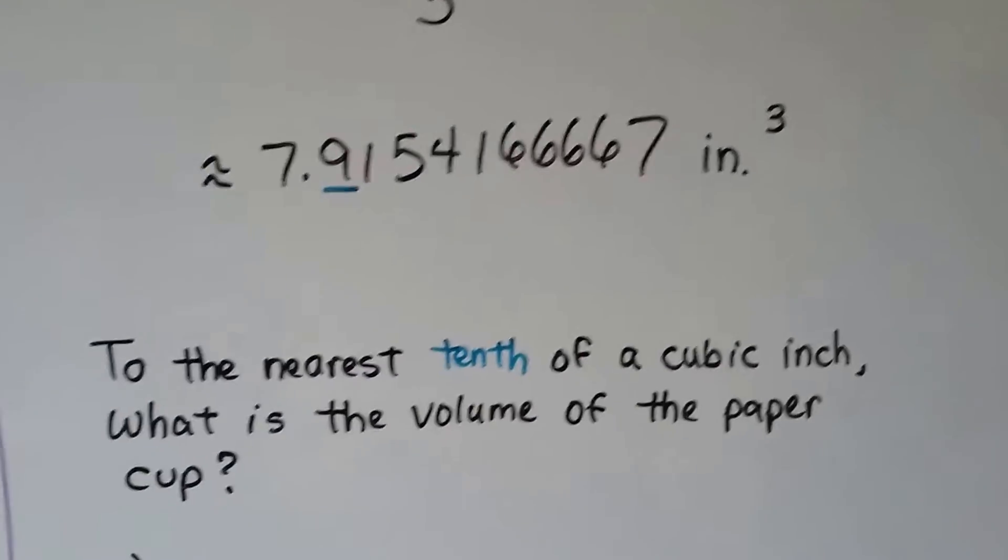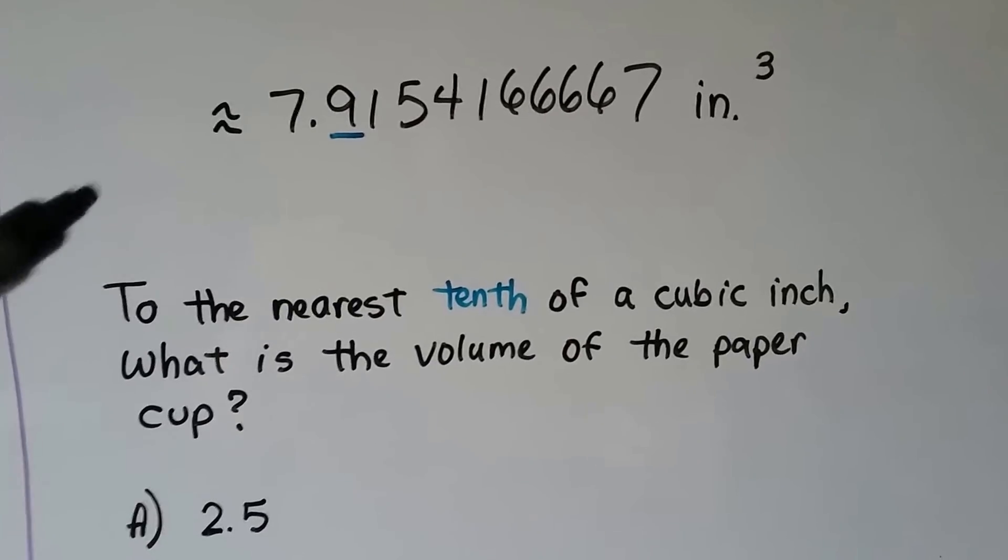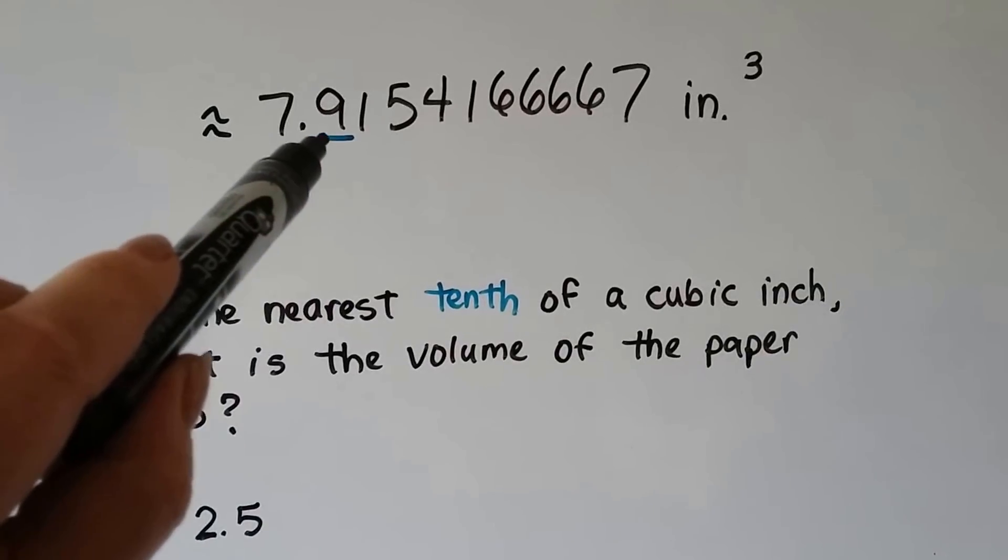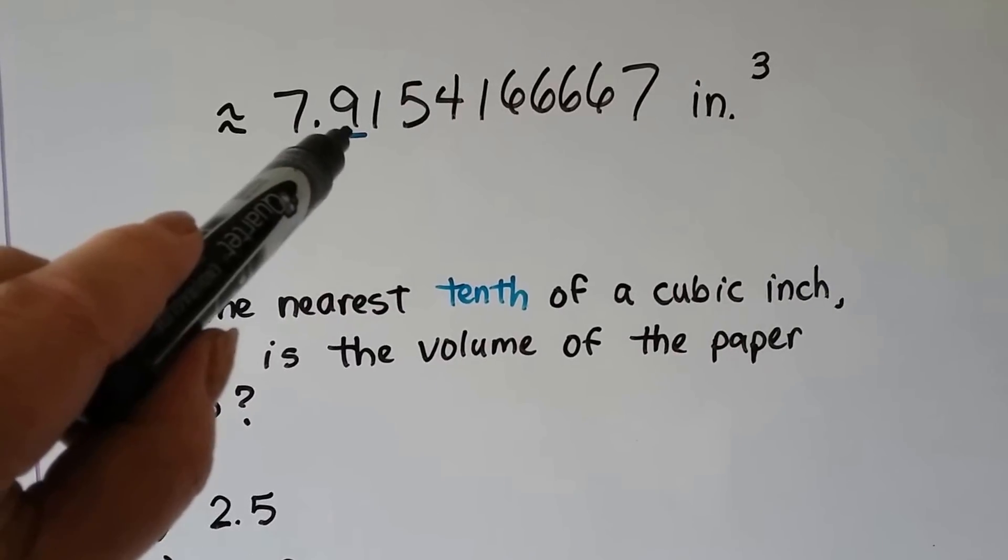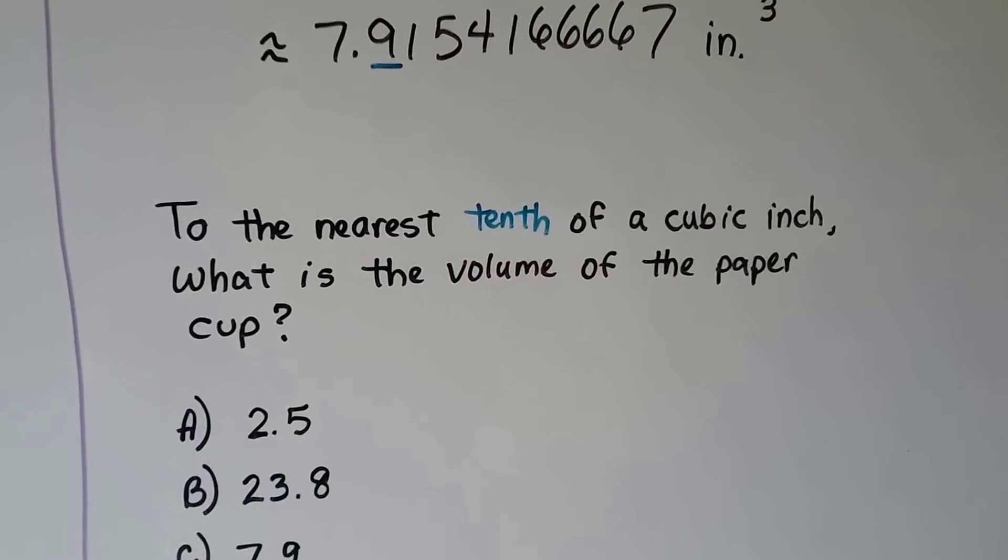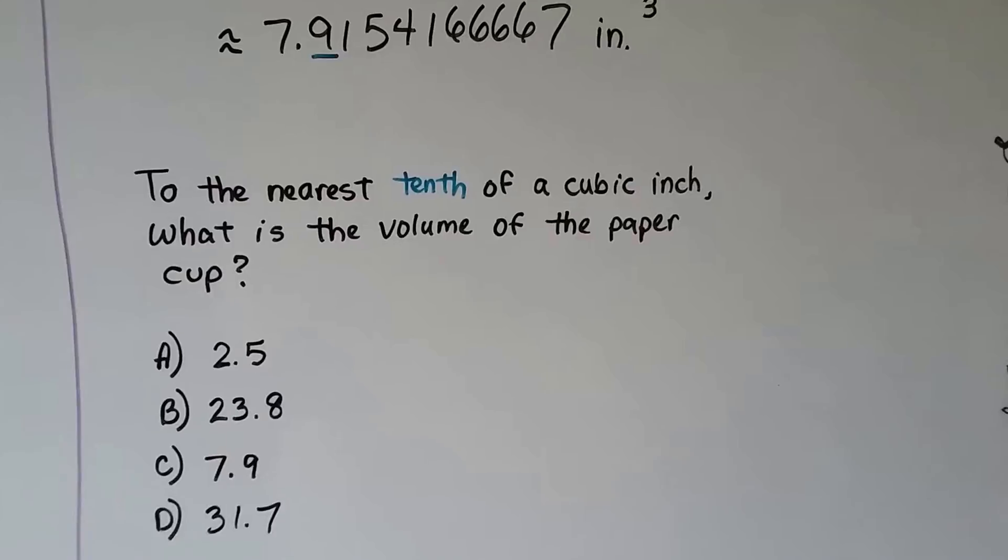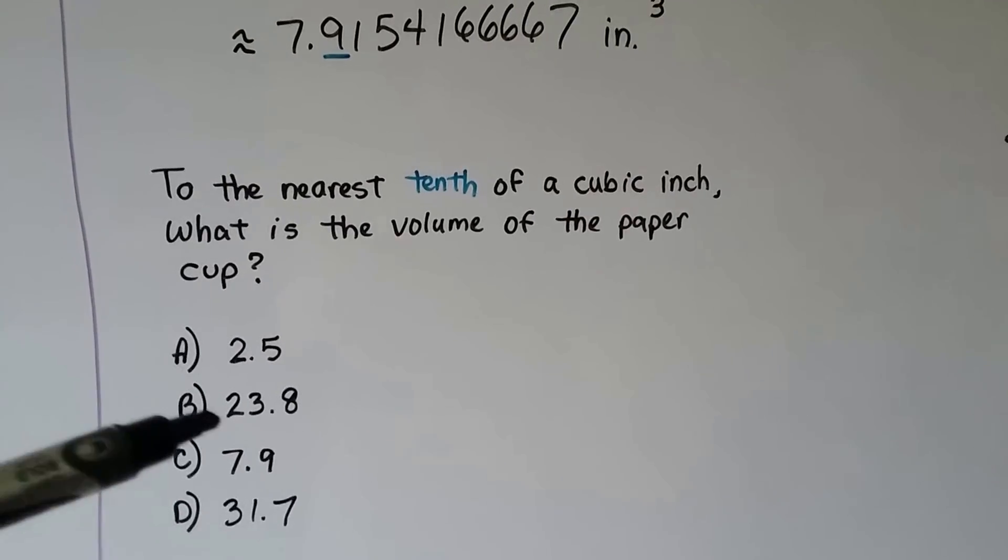We have a 7.91. And it wants us to give the answer to the nearest tenth of a cubic inch. And that 9 is in the tenths place. The 1 is telling it to stay the same. So what is the volume of the paper cup to the nearest tenth of a cubic inch? It's C.